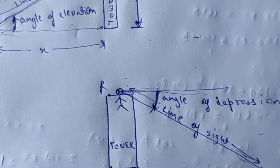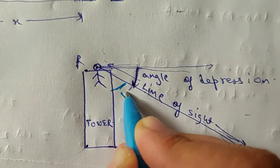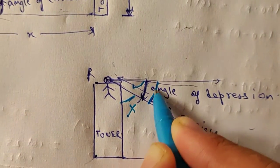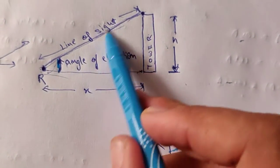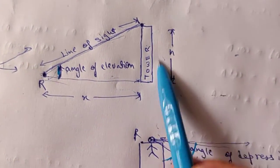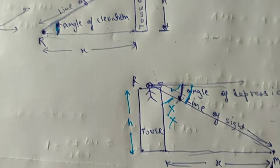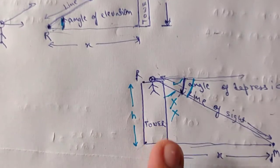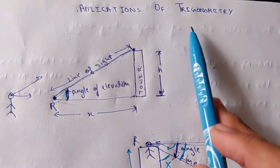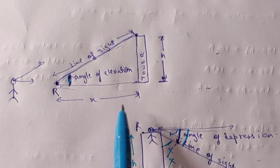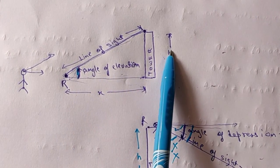Always remember: the angle of elevation or depression is measured from the horizontal line, not the vertical. The line of sight is not the height of the tower — the height is the vertical side. We have studied two cases: one for angle of elevation and one for angle of depression. Now I will explain how trigonometry is applied to solve these.